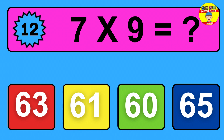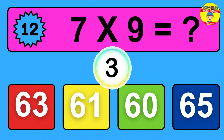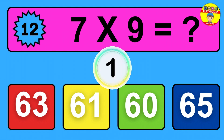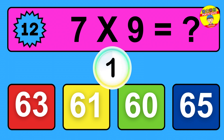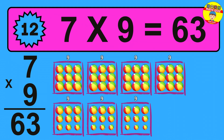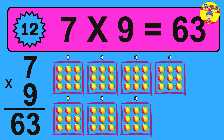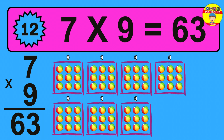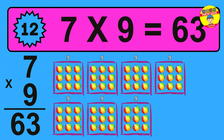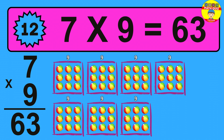Question 12: 7 times 9 equals what? The answer is 7 times 9 is 63. To calculate, we have 7 groups with 9 balls each one. So how many balls do we have? 63 balls.